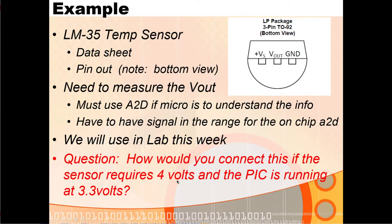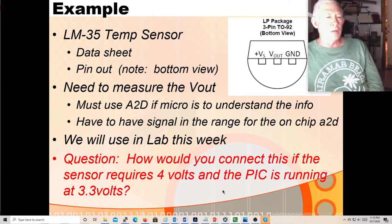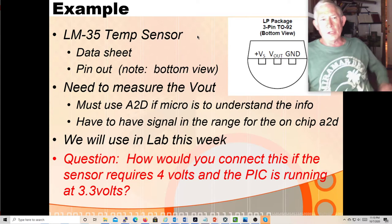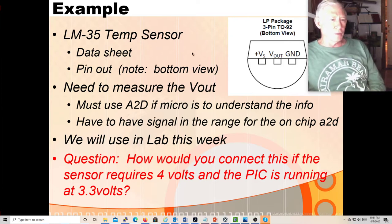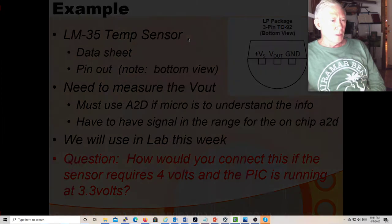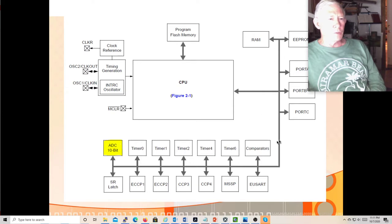That's one example of why we need analog-to-digital converters. If the sensor requires 4 volts and the PIC is running at 3.3 volts, you'd have to give it 4 volts and then condition V-out by attenuating it — generally using an operational amplifier. Op-amps are wonderful devices because you can set them up to either amplify or attenuate a signal, DC-shift it, all very easily with just a few resistors. Here's our ADC module — one of the many peripheral modules we have along with our CPU, program memory, clock generation, RAM, EEPROM, GPIO ports, and various functional modules.